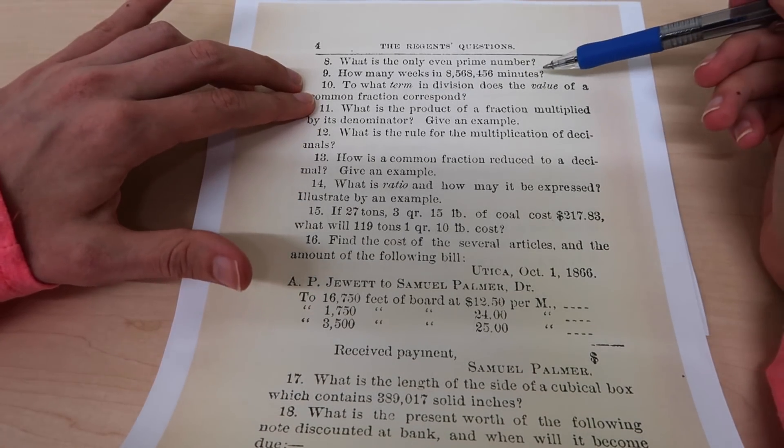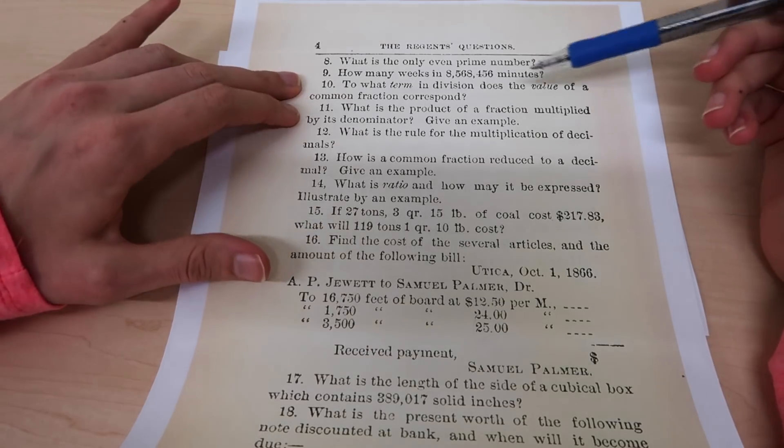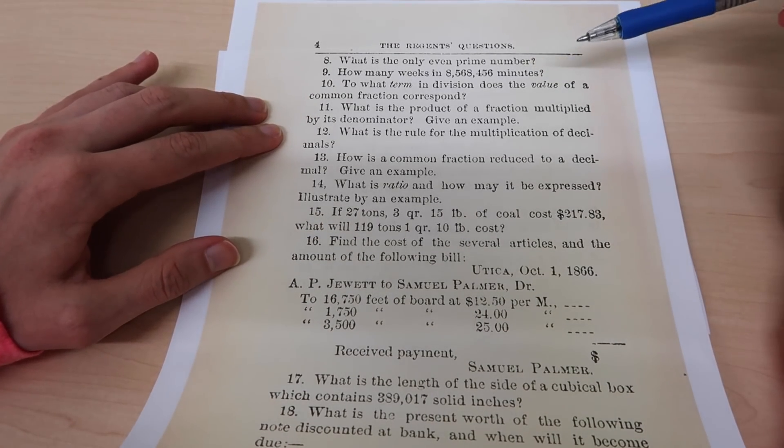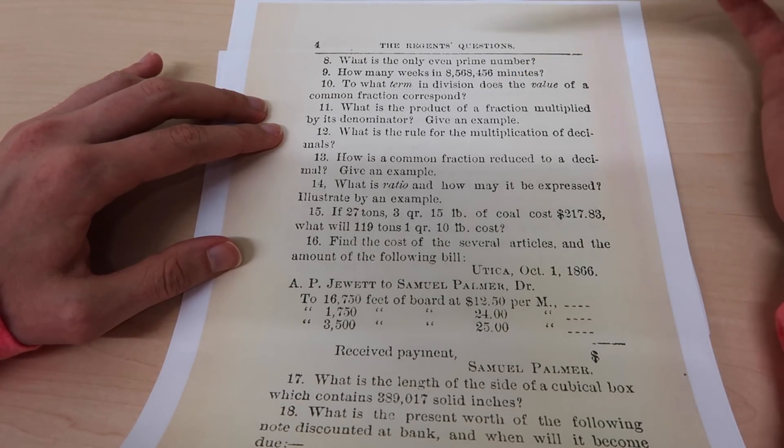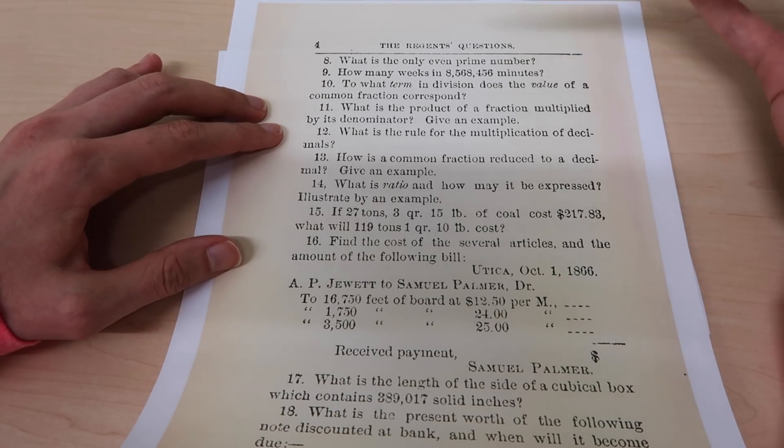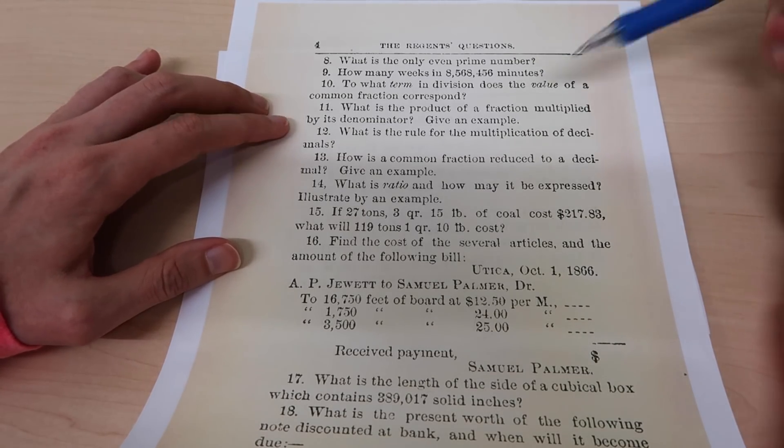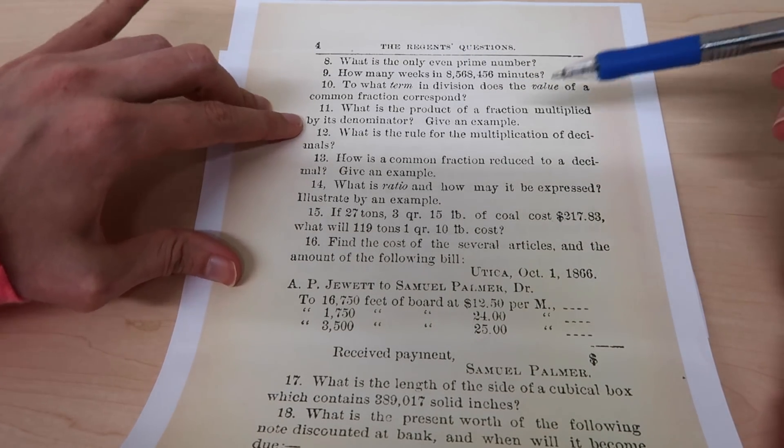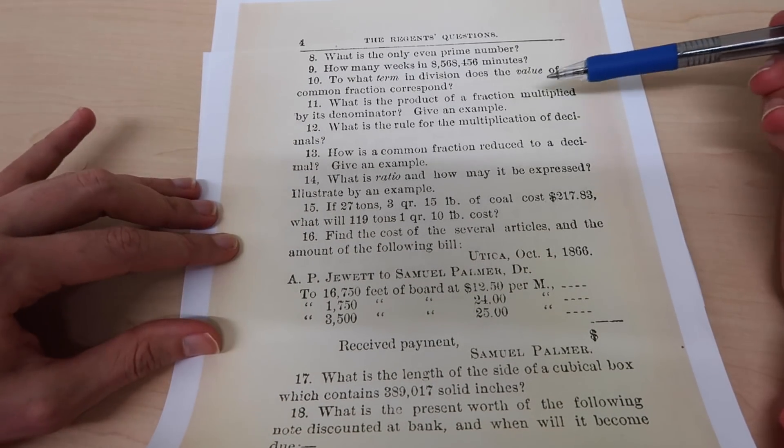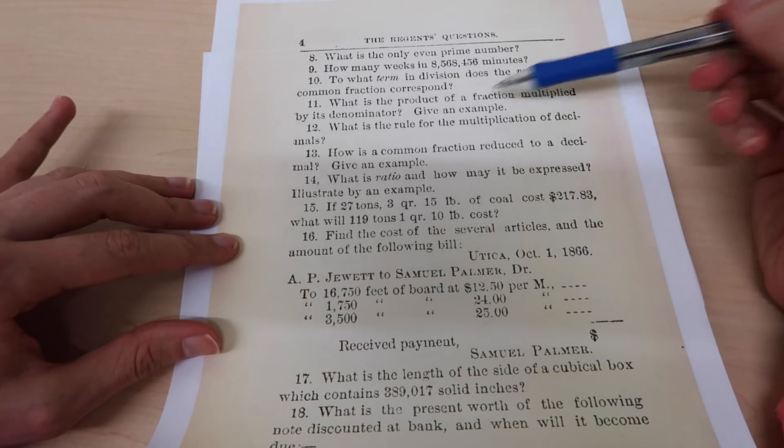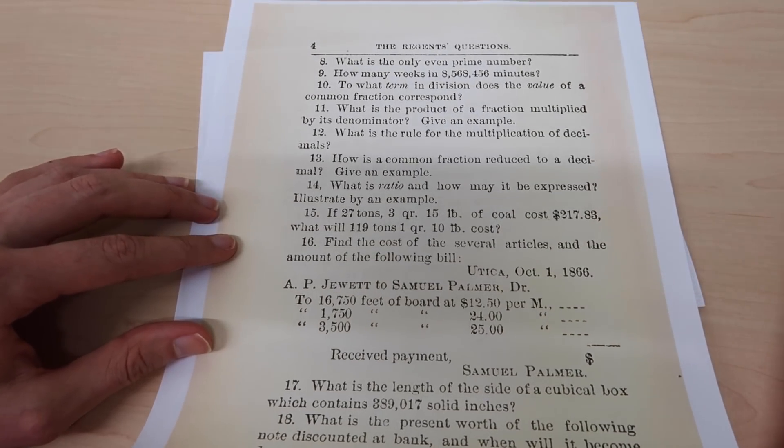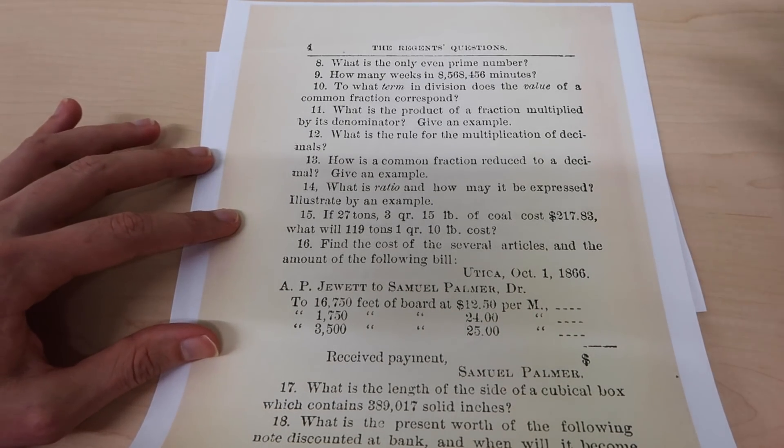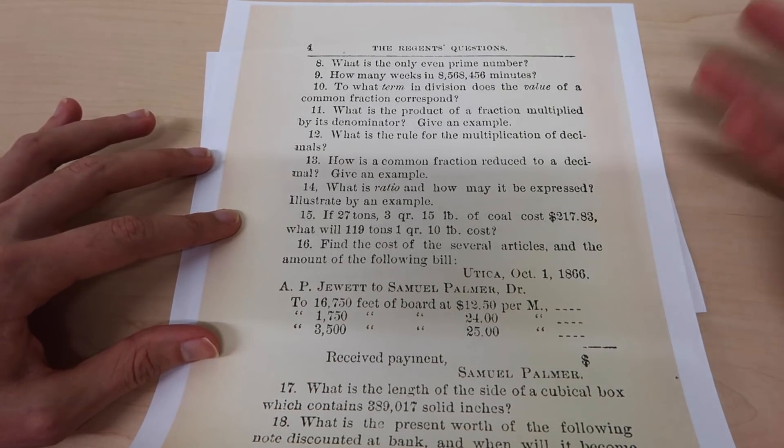Hope you'll sharpen up your long division skills because mine are very rusty. Number 10: to what term in division does the value of a common fraction correspond? I don't really know what the terms in division are except that it could be like the dividend, the divisor, the quotient or the remainder. I'm going to have to pass on that one though. Number 11: what is the product of a fraction multiplied by its denominator? Well, if we had the fraction one half and multiplied it by two, you just end up with one, or you just end up with whatever you started with on the top, so that would be the numerator.